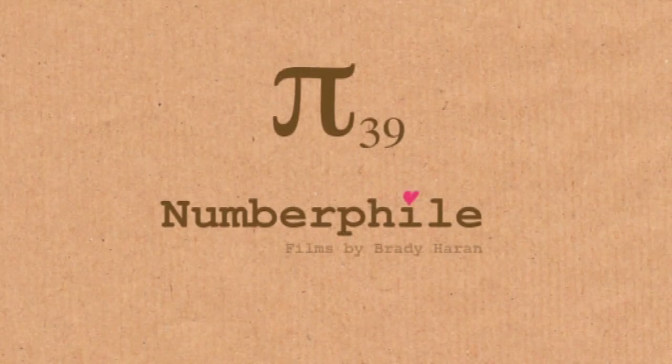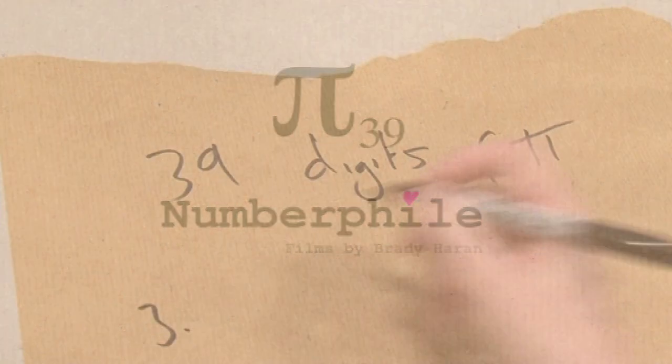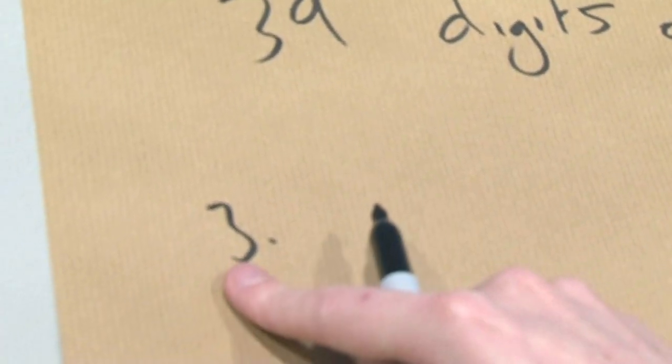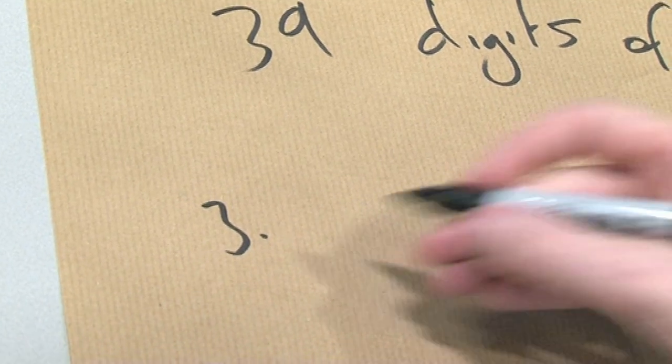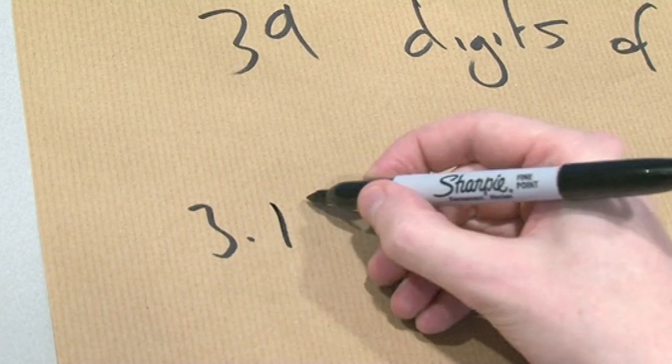Shall we write out the 39 digits? I'll just put it here. So the 39 digits of pi — it's three point... now, three counts as one of the digits, so it's now 38 decimal places. Let's do the 38 decimal places.